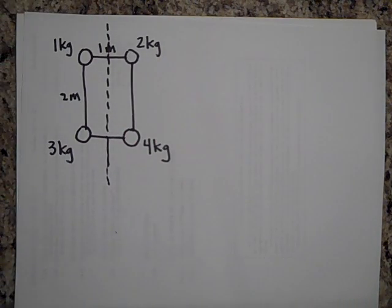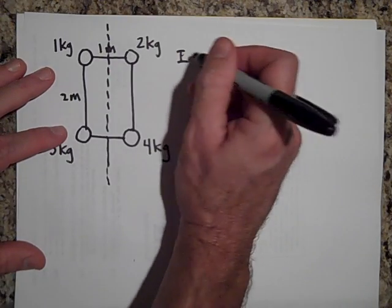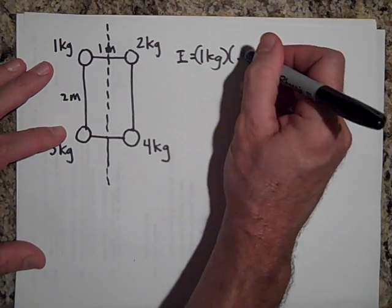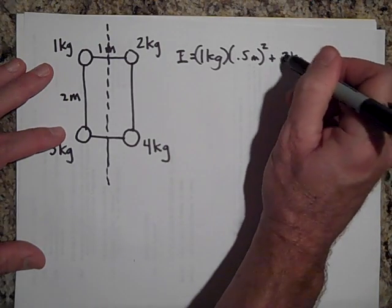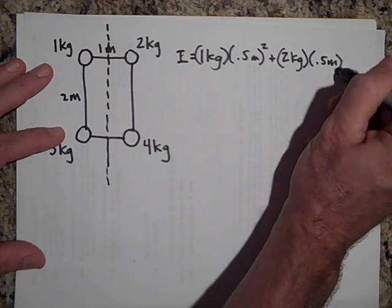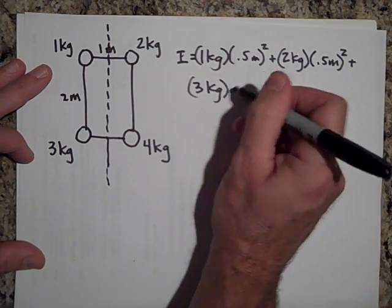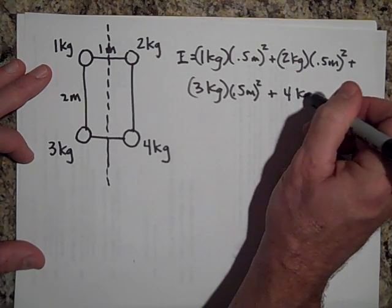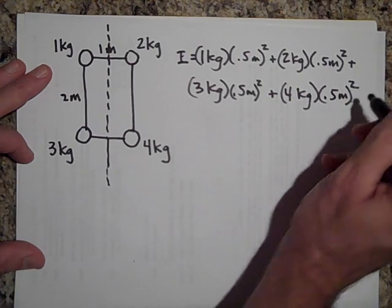Okay, so that all said, let's calculate what it is. So I now, if this is one meter across, then that's going to be I is going to equal one kilogram times a half meter squared, plus two kilograms times a half meter squared, plus three kilograms times a half meter squared, plus four kilograms times a half meter squared. They're all a half meter from the axis.